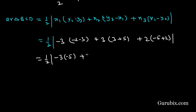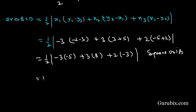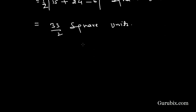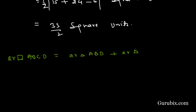Calculating: (1/2) |(-3)(-5) + 3(8) + 2(-3)| = (1/2) |15 + 24 - 6| = (1/2)(33) = 33/2 square units. Now we can find the area of quadrilateral ABCD by adding the area of triangle ABD and the area of triangle BCD.